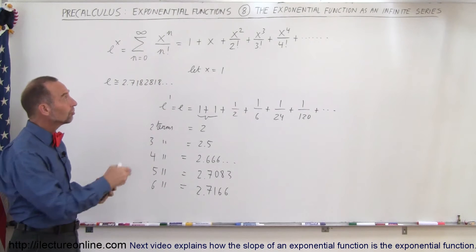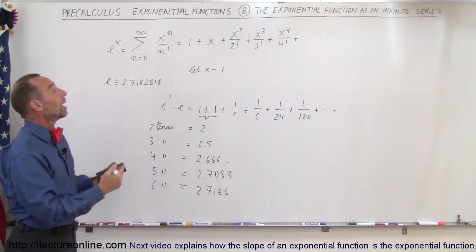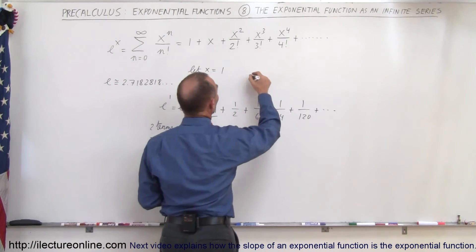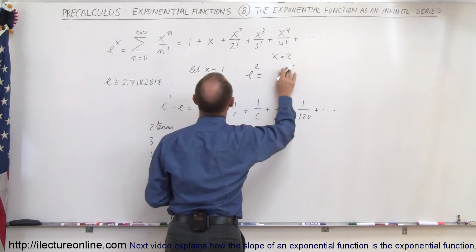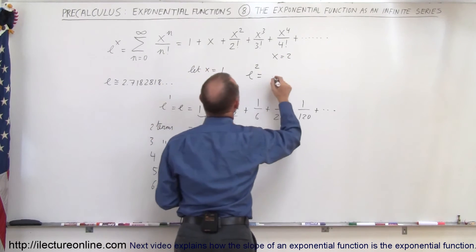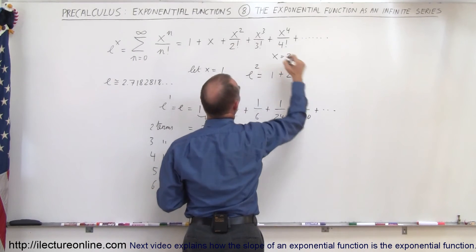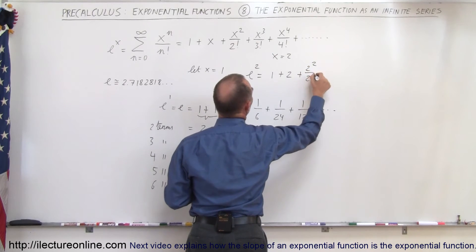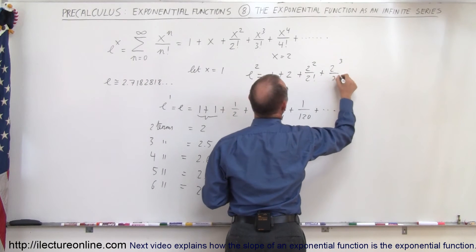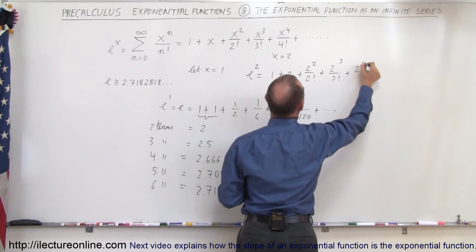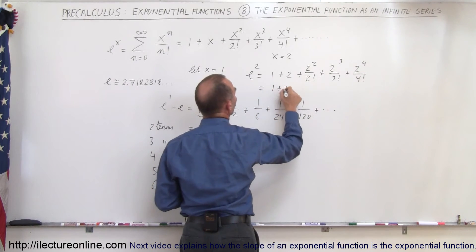Then, of course, if you want to use this very same infinite series for, let's say, e to the second power, so you want to find what is e to the second power equal to, that means the case where x is equal to 2. You would go ahead and plug that in here, so that would be equal to 1 plus 2, plus 2 squared over 2 factorial, plus 2 cubed over 3 factorial, plus 2 to the fourth power over 4 factorial, and so forth.